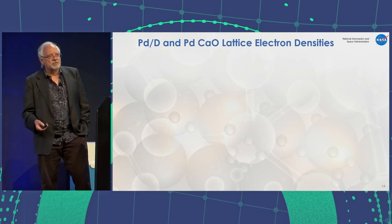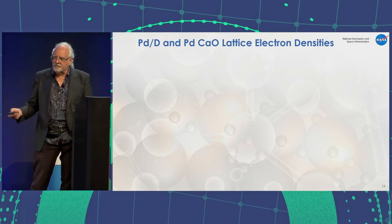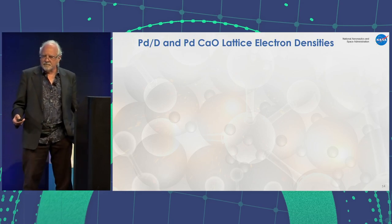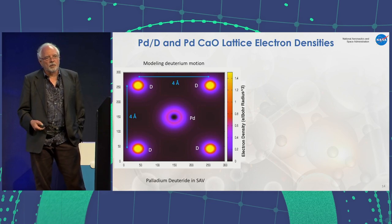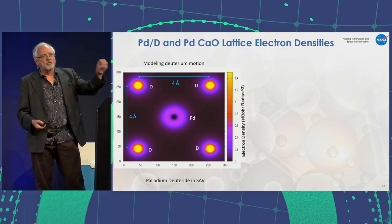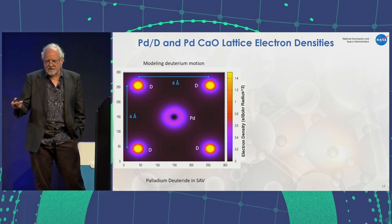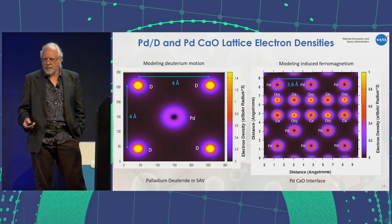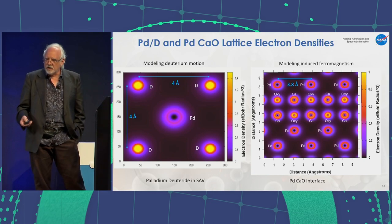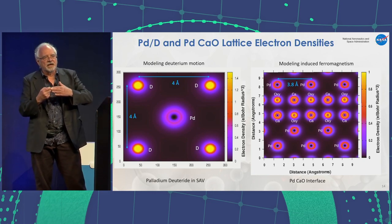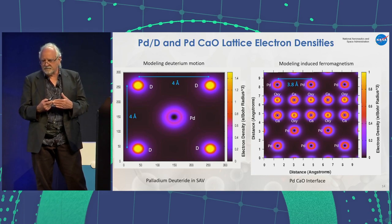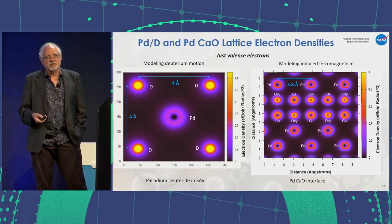We've applied this to systems more useful to this community, looking at palladium deuterium and palladium deuterium with calcium oxide as a lattice and a superlattice. On the left-hand side, we show palladium deuteride where we've invoked superabundant vacancies by removing various palladium atoms—the distance between hydrogen atoms is about 4 angstroms. You'll notice the highest electron density is concentrated where the hydrogen or deuterium are. We've also done modeling of induced ferromagnetism, where an oxygen-calcium layer in contact with palladium strains the palladium to induce itinerant ferromagnetism. In both cases, we're just looking at valence electrons.